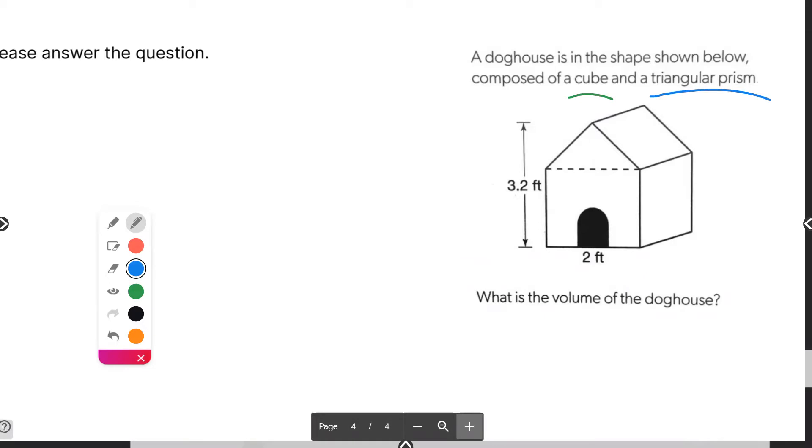So let's start with the easy one first. Let's talk about the cube. The cube, like the rectangular prism, can be found by taking the length times the width times the height. Now, I hope you all recognize that what makes a cube special is that the length and the width and the height are all the same.